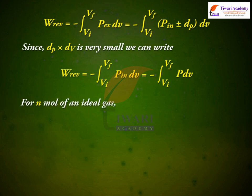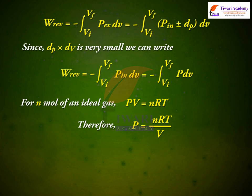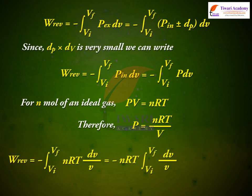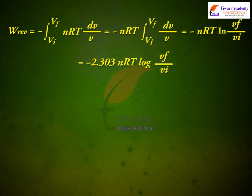For N moles of an ideal gas, W_reversible = −∫(Vi to Vf) (NRT/V) dV = −NRT ∫(Vi to Vf) dV/V = −NRT ln(Vf/Vi) = −2.303 NRT log(Vf/Vi).